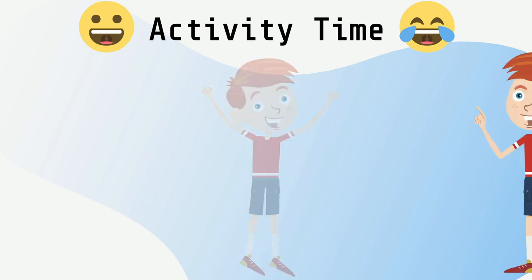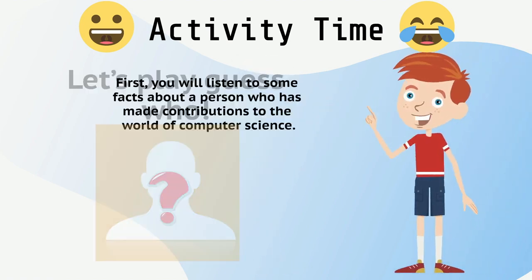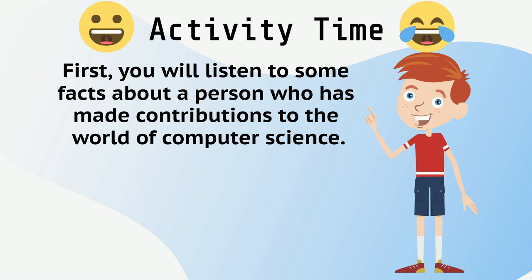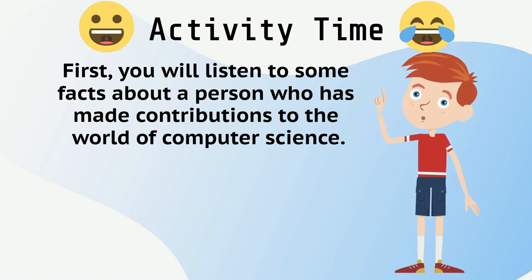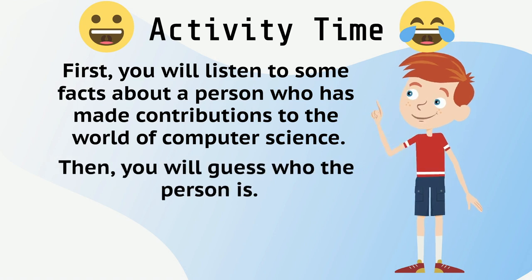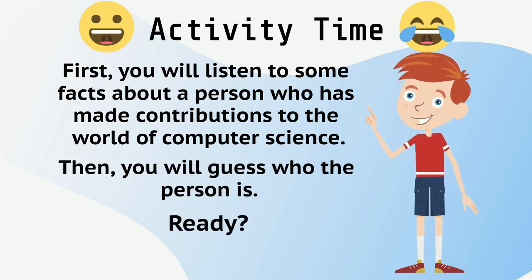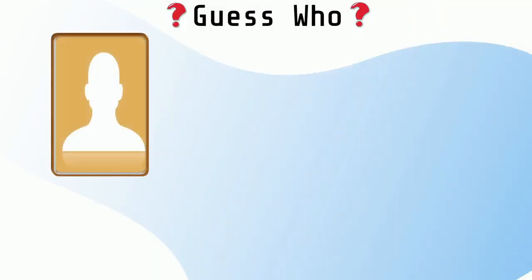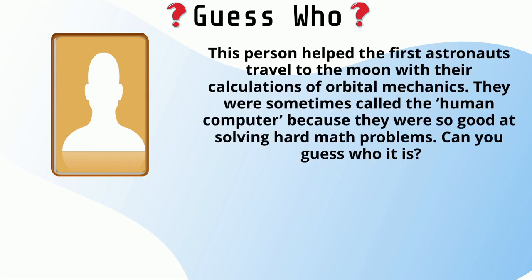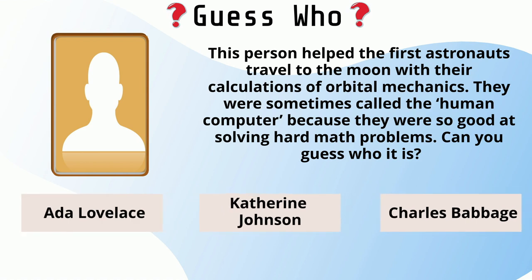Activity time! Let's play Guess Who. You will listen to some facts about a person who has made contributions to the world of computer science, then you will guess who the person is. Ready? Let's go! Round one. This person helped the first astronauts travel to the moon with their calculations of orbital mechanics. They were sometimes called the human computer because they were so good at solving hard math problems. Can you guess who it is? Pause the video here to answer the question.